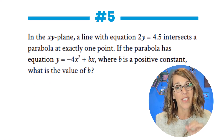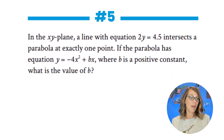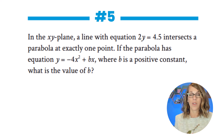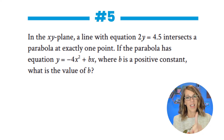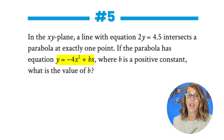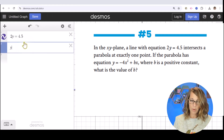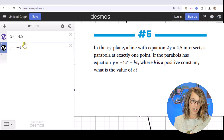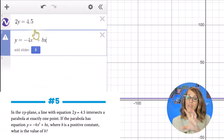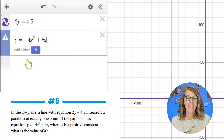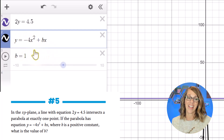To get to the answer of number five, we're going to use one of the amazing features of Desmos that your graphing calculator does not have. We're given a line with equation 2y = 4.5, and it intersects a parabola at exactly one point. The equation of the parabola is y = -4x² + bx. Our goal is to find the coefficient b. I'll type in both equations: first the line 2y = 4.5, and then the parabola y = -4x² + bx. Desmos doesn't recognize b, so it prompts you to add a slider.